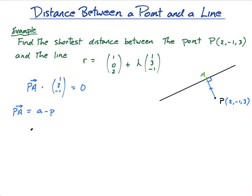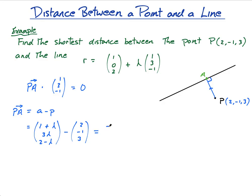What's the position vector of A? Well, it's the parameterised point on the line — at some point I don't know yet — so it's (1 + λ, 3λ, 2 - λ). That is the position vector of point A. Then PA = A minus P = (1 + λ - 2, 3λ + 1, 2 - λ - 3), which gives (-1 + λ, 3λ + 1, -1 - λ). This is vector PA.